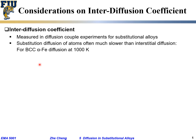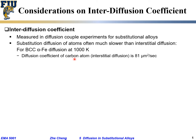We are looking at alpha iron at 1000 K — about 700-something degrees C — for BCC alpha iron, which has a body-centered cubic structure. The diffusion coefficient of carbon — what type of diffusion? Interstitial diffusion — is 81 microns squared per second.